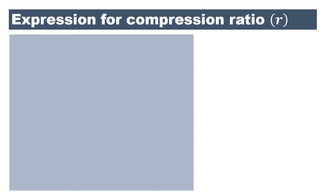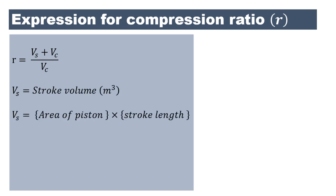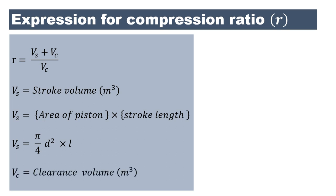The compression ratio r is expressed as (Vs + Vc) / Vc, where Vs is the stroke volume given by (π/4)D²L, and Vc is the clearance volume. Knowing these values allows easy calculation of the compression ratio, with detailed derivations available for the Otto and diesel cycle analyses.